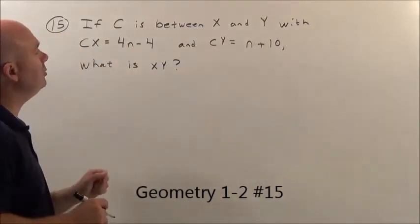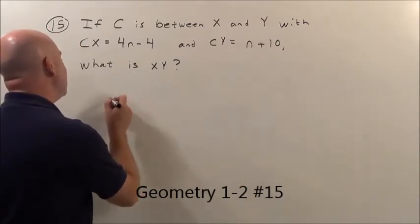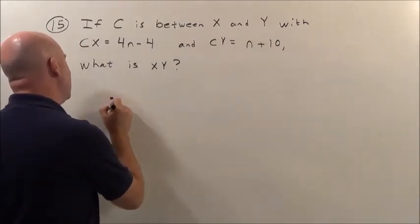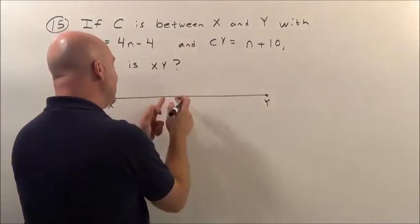15. If C is between X and Y, again, we'll stop right there. C is between X and Y, that means you have a point. X right here goes to its buddy over here, Y. There's your line segment X, Y. C is between them.